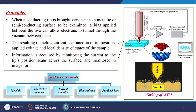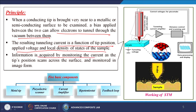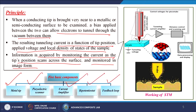What is the working principle? When a conducting tip is brought very near to a metallic or semiconducting surface, a bias applied between the two allows electrons to tunnel through the vacuum between them. The resulting tunneling current is a function of tip position, applied voltage, and the local density of states of the sample. Information is acquired by monitoring the current as the tip scans across the surface. The five basic components are: metal tip, piezoelectric scanner, current amplifier, bipotentiostat, and feedback loop.